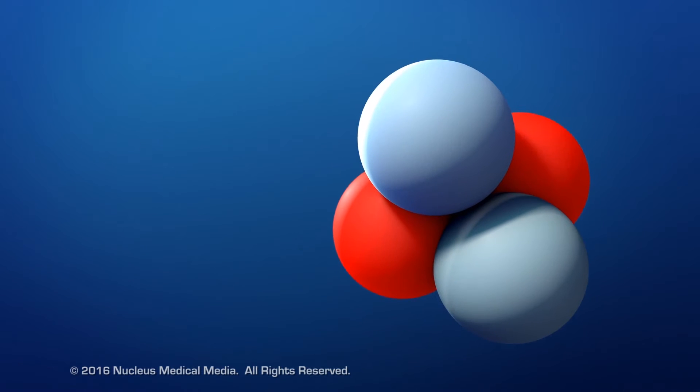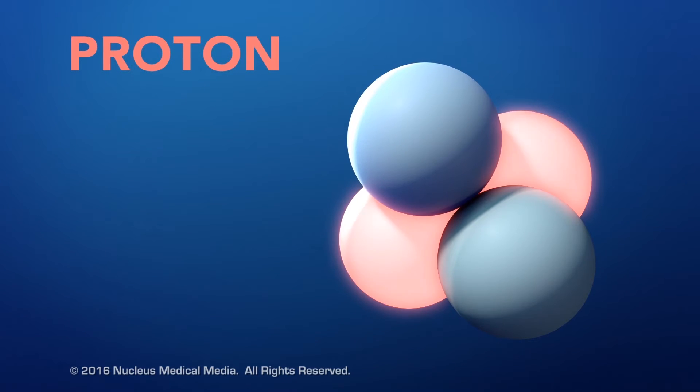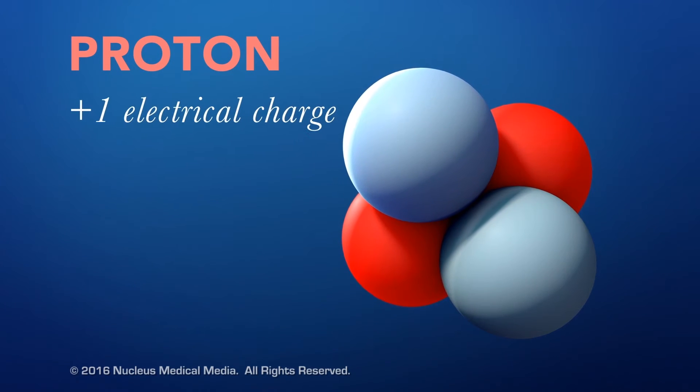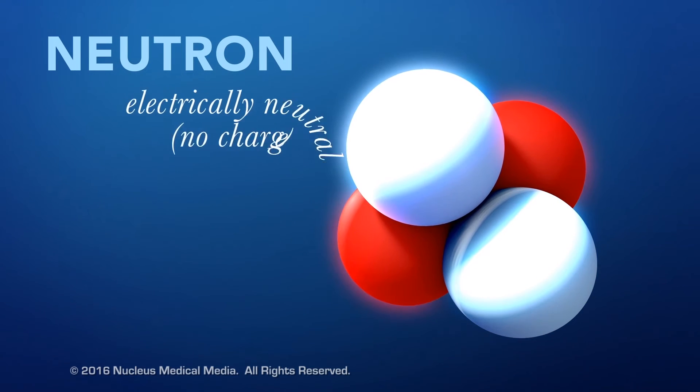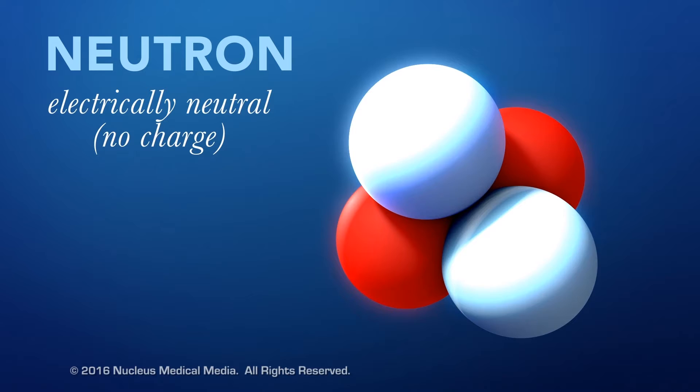In addition to mass, some subatomic particles also have an electrical charge. A proton carries a positive charge of plus 1. As its name indicates, a neutron is electrically neutral, which means it has no charge.